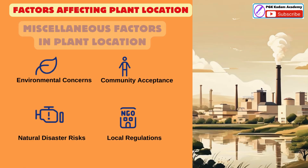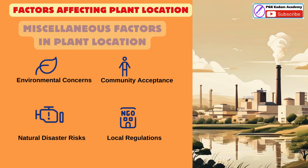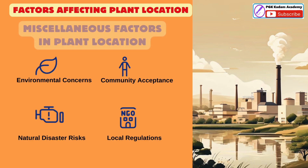Miscellaneous Factors in Plant Location: Environmental Concerns — consideration of environmental impact and sustainability is crucial in modern plant location decisions. Community Acceptance: The attitude of the local community towards industrial development can significantly impact plant operations. Natural Disaster Risks: Assessment of potential natural disaster risks is essential to ensure long-term stability and safety of the plant. Local Regulations: Understanding and complying with local regulations and zoning laws is crucial for smooth operations.